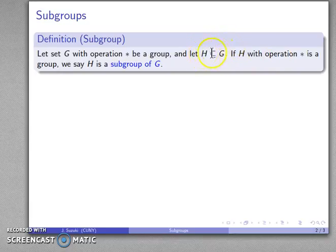One warning moving forward is that this notation we ordinarily would read as H is a subset of G, but now that we're talking about groups, we can read this as H is a subgroup of G. The difference is that sets don't have operations, but groups do have specific operations associated with them.